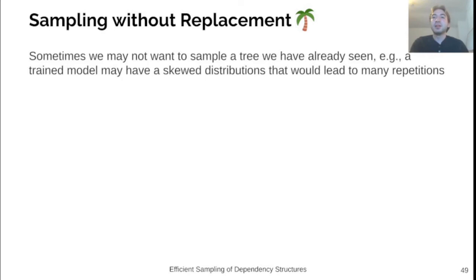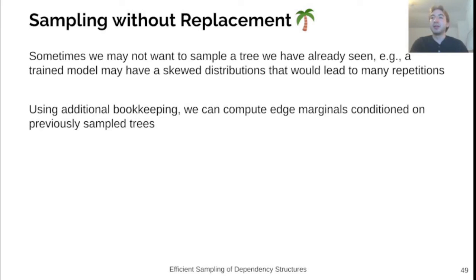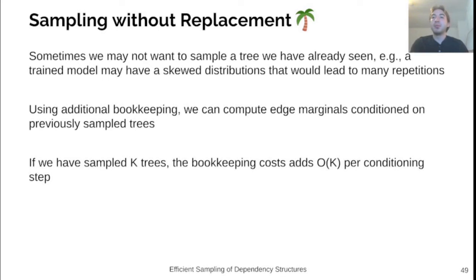We lastly would like to mention our novel sampling without replacement algorithm. Sampling without replacement means that we will never resample the same tree from a graph. This may be useful if the distribution of trees is skewed, so we are likely to repeat trees. This will be the case for most trained models. We were able to add extra bookkeeping to Colburn's algorithm that maintains and updates different components of the marginal probabilities that allow us to correctly and efficiently update the marginal probabilities to take into account previously sampled trees. We require an additional big O of k work per sampling operation, where k is the number of previously sampled trees. This means that to sample k trees, we require big O of n cubed times k plus n squared times k squared time. We provide the details and proofs of this algorithm in our paper.